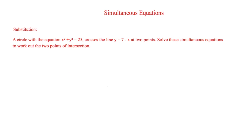The final thing to look at in this topic is substitution, and normally you see this in context. The question here is: a circle with equation x squared plus y squared equals 25 crosses the line y equals 7 minus x at 2 points. We have to solve these simultaneous equations to work out the 2 points of intersection, and we will use substitution.